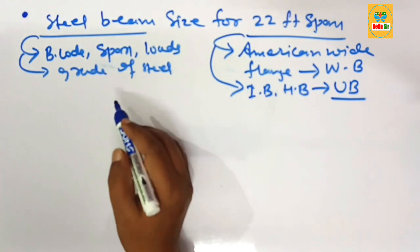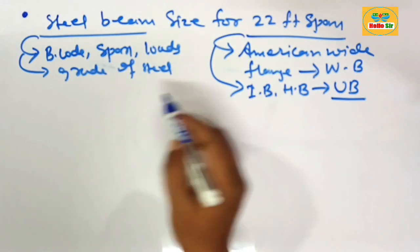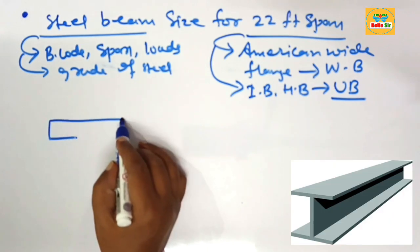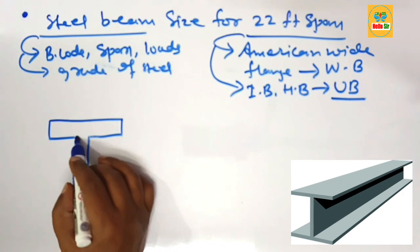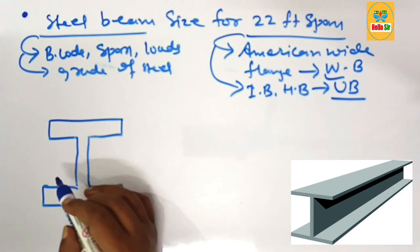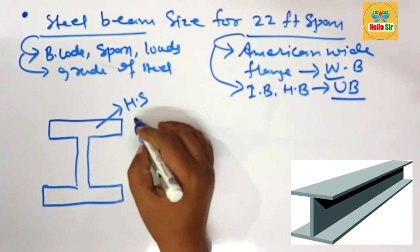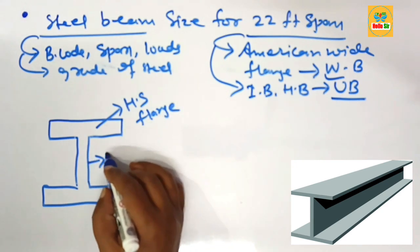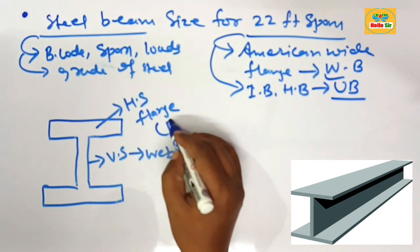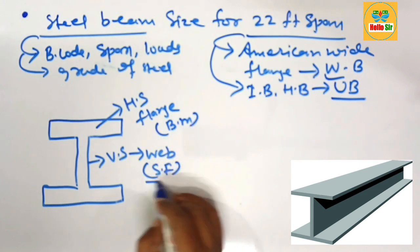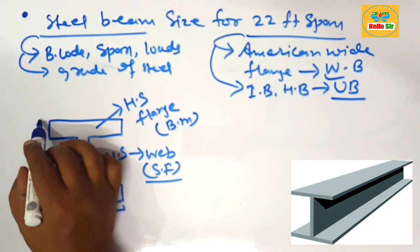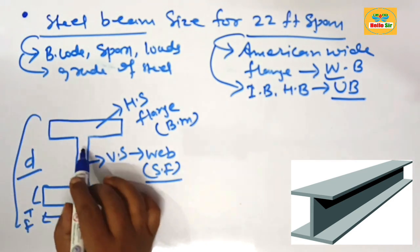First, let's understand the American wide flange beam. Here we make a rough diagram. This is the W beam or American wide flange beam. The horizontal section of the beam is known as the flange, and the vertical section is known as the web. The flange resists bending moment, and the web resists shear forces. We also identify the width of the flange, the thickness of the flange, the depth of the section, and the thickness of the web.